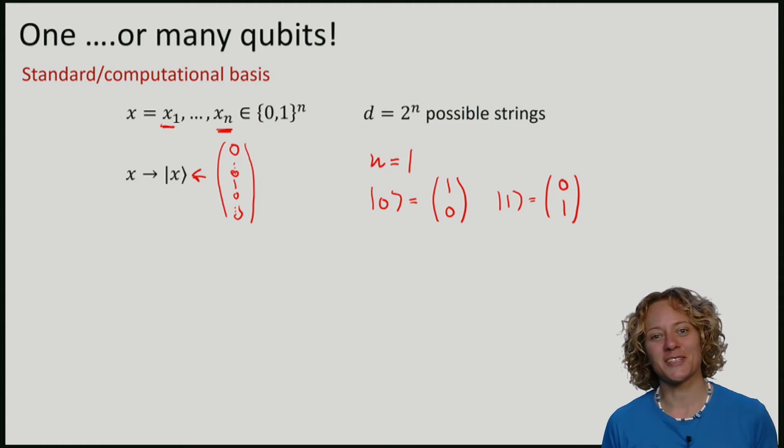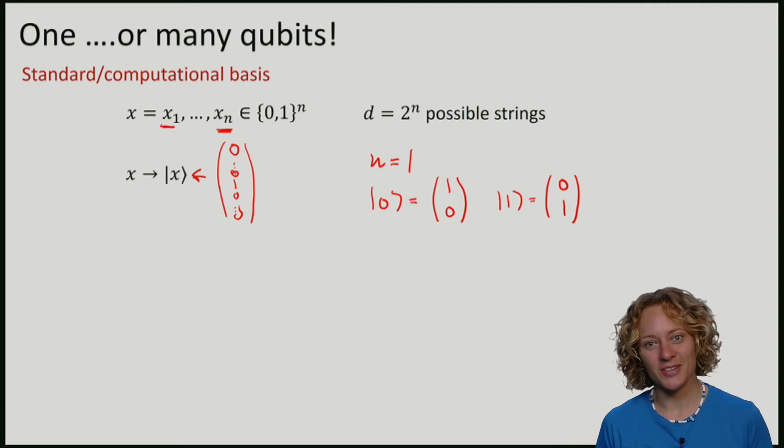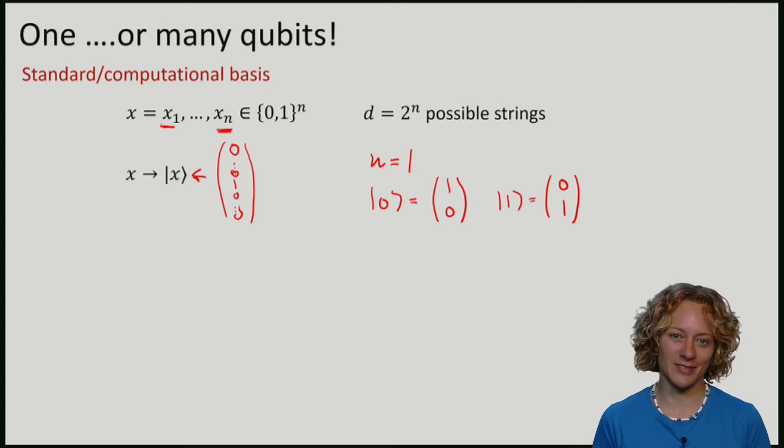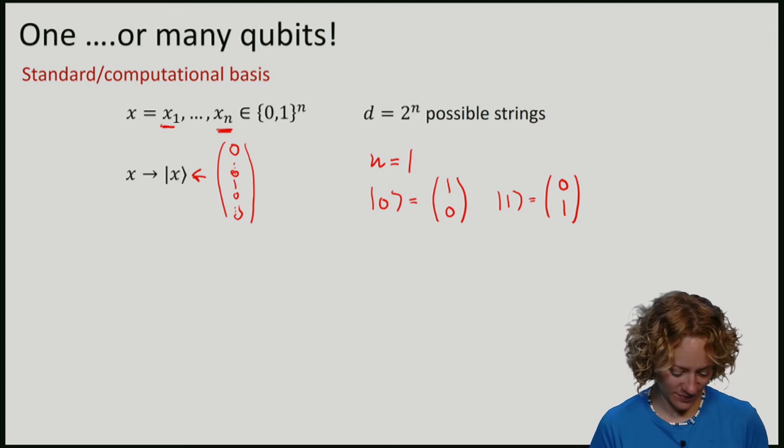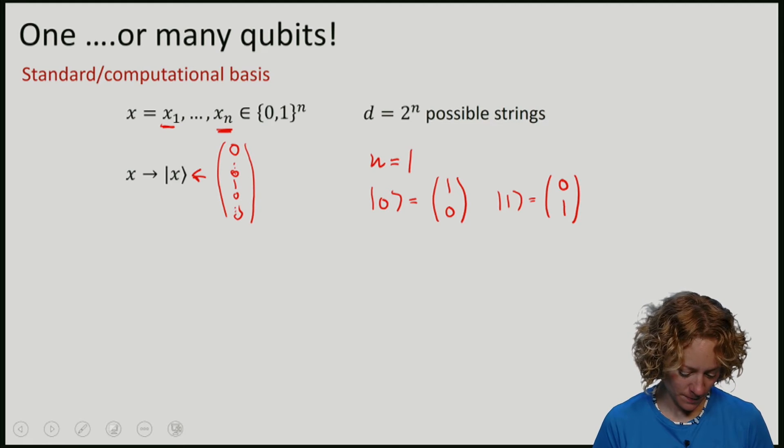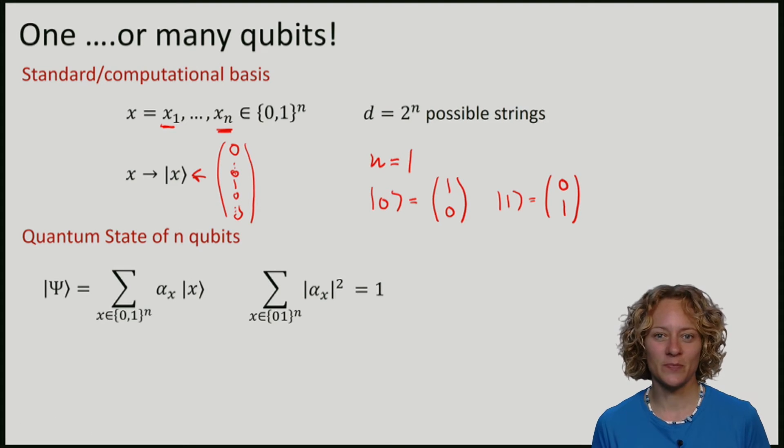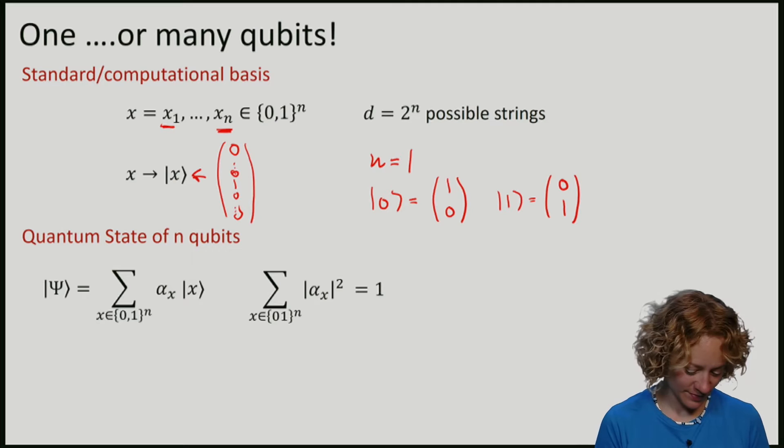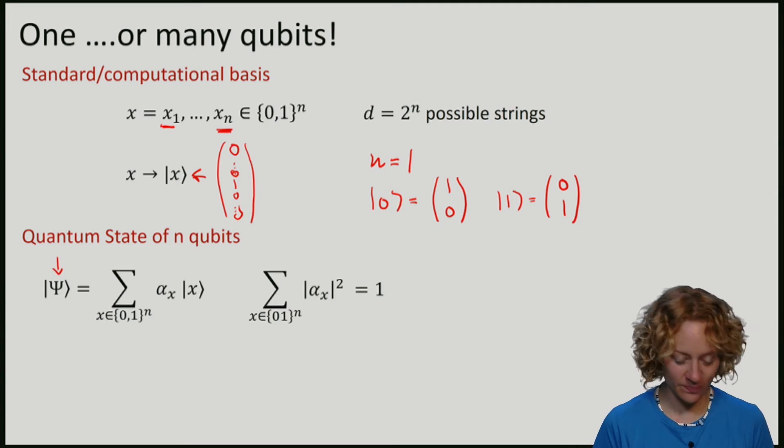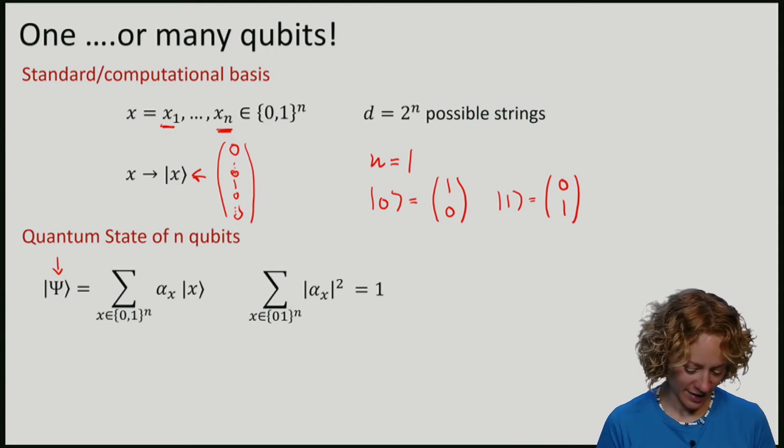Now that we can write down classical strings as vectors, we can again consider a superposition of these vectors. So we can write the state of n qubits as a vector, namely this one, whose coefficients are alpha x.